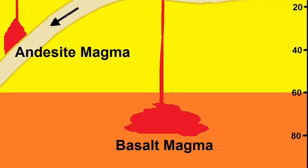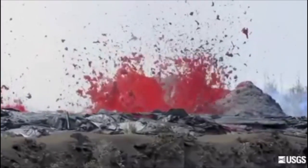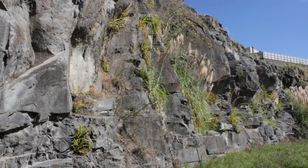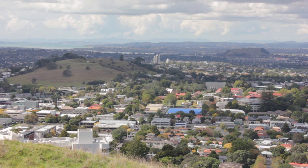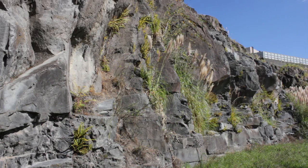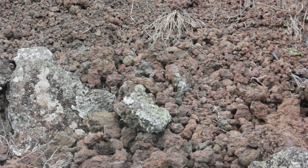Basaltic magma is formed at great depths and is a hot liquid rich in iron. Basaltic magma is described as basic. The Auckland volcanic field has erupted this type of hot, runny, iron-rich lava, and the landscape is dotted with mountains made from dark basalt and scoria. Scoria is a red coloured rock that contains large amounts of iron-rich minerals.